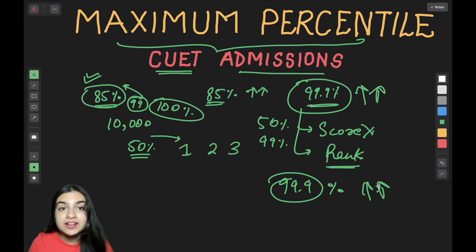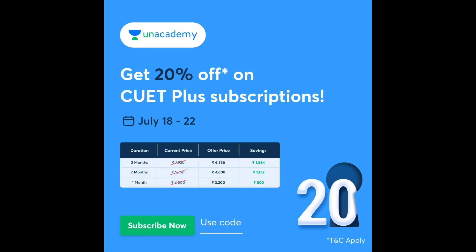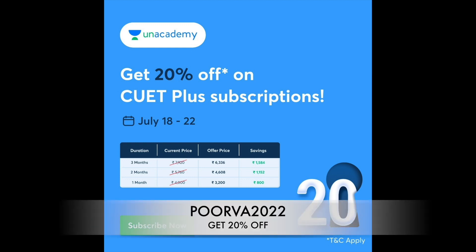Dear learners, before moving forward, here is a glimpse of Unacademy's latest offer, which provides you 20% off on CUET Plus subscriptions. You can use my code PURVA2022 to get 20% off on CUET Plus subscriptions.